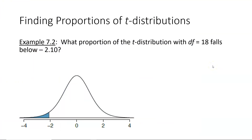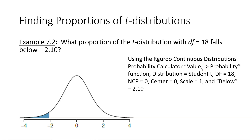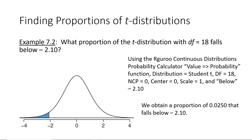Now that we've shown how to use our guru to find the proportion value for degrees of freedom of 18 and a t value below negative 2.10, you would put the following work on paper. You must include this as your work whenever you use our guru for finding a proportion value as just demonstrated.